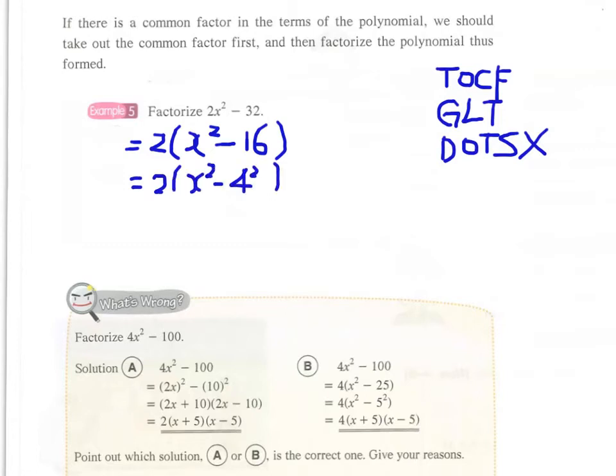Therefore, we have 2 times x² minus the square of 4. And this will be our final answer: 2(x - 4)(x + 4).